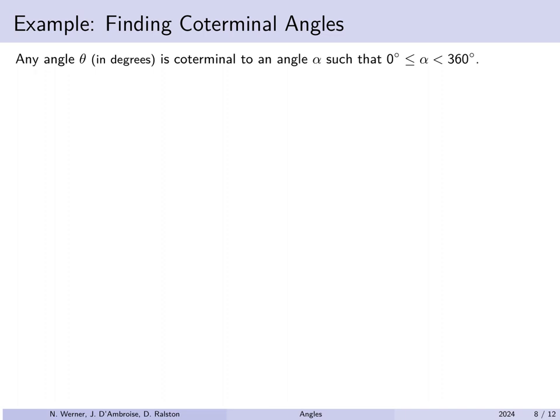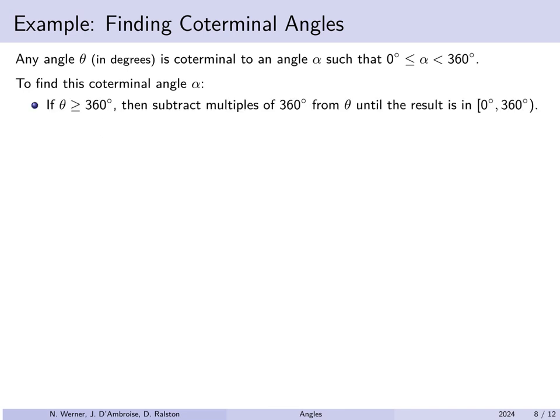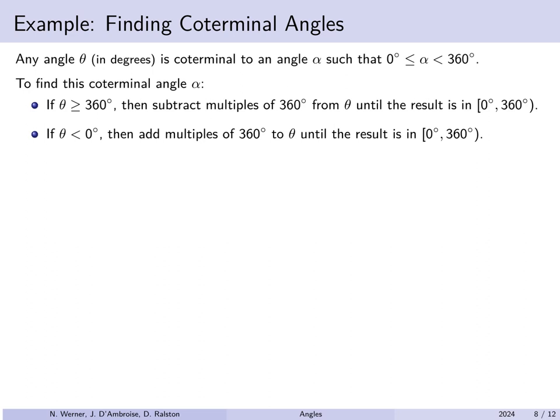Any angle in degrees can always be found to be coterminal with something between 0 and 360 degrees. To find this coterminal angle, if your angle is bigger than or equal to 360 degrees, subtract 360 degrees until you're in the range [0, 360). If you have a negative angle, do the opposite — add 360 degrees until you end up within that range.